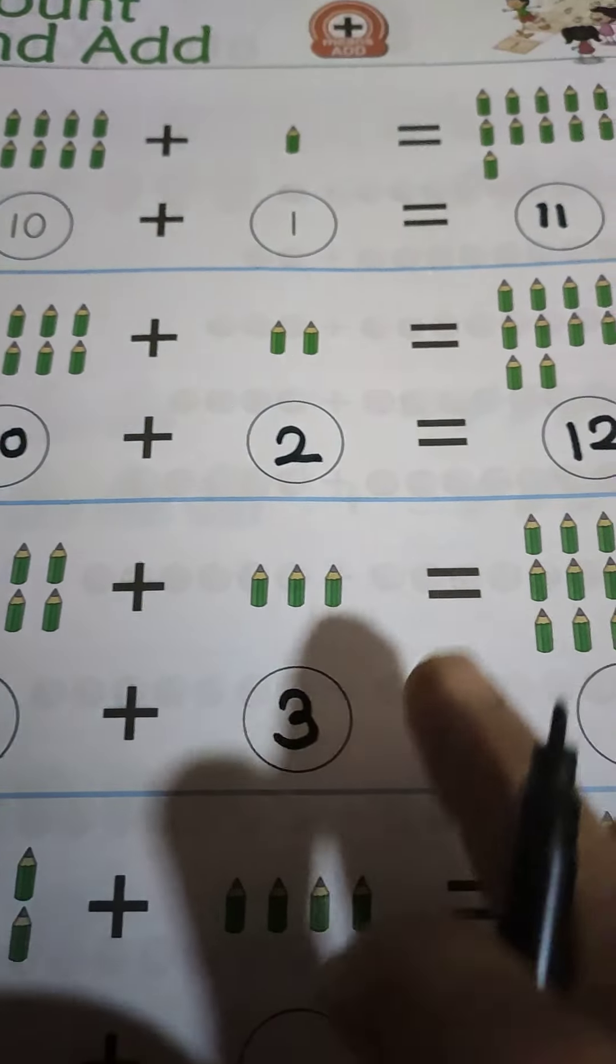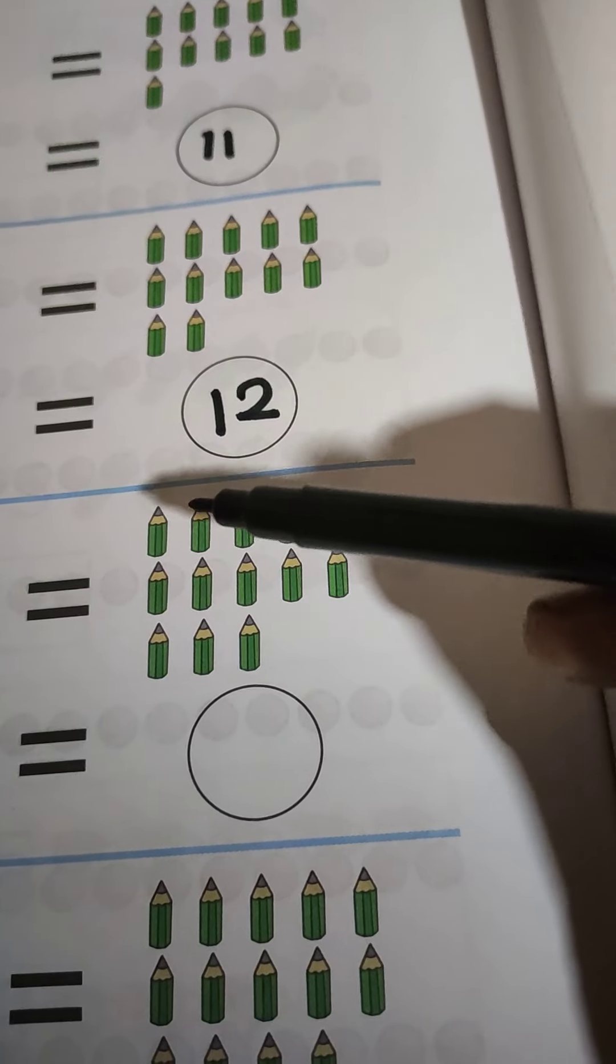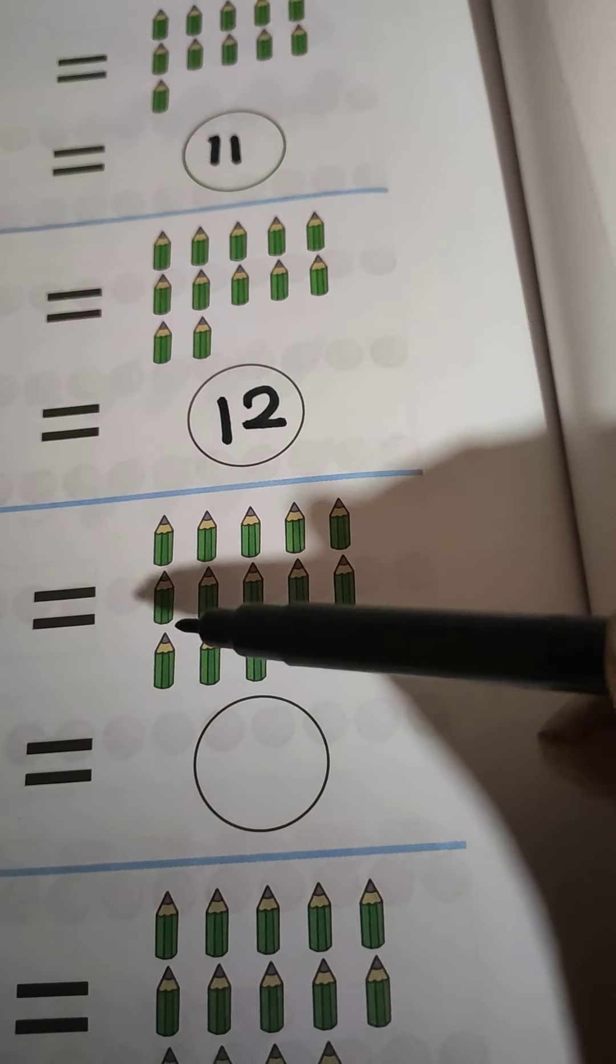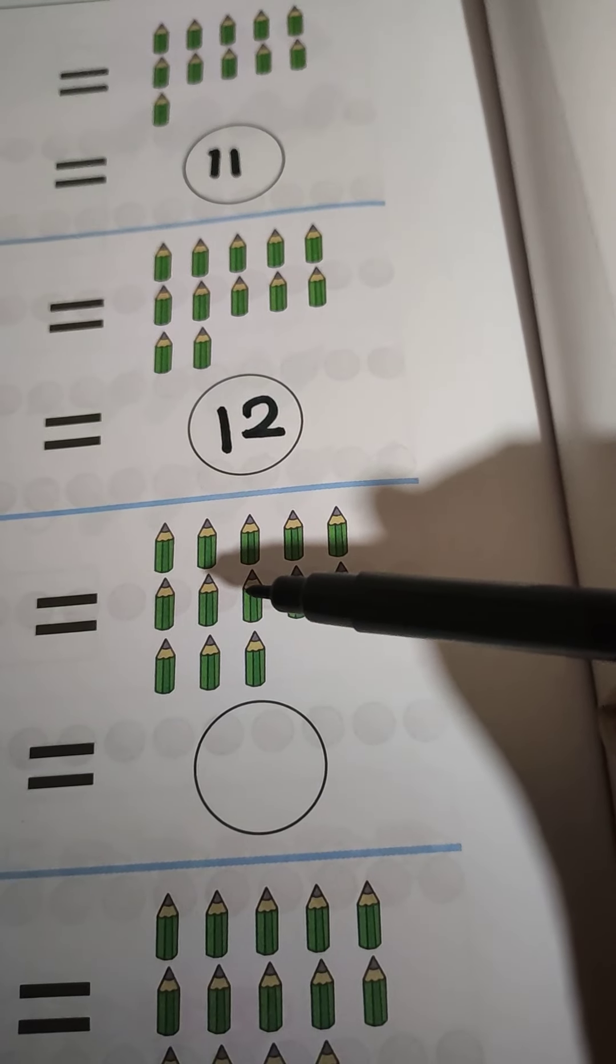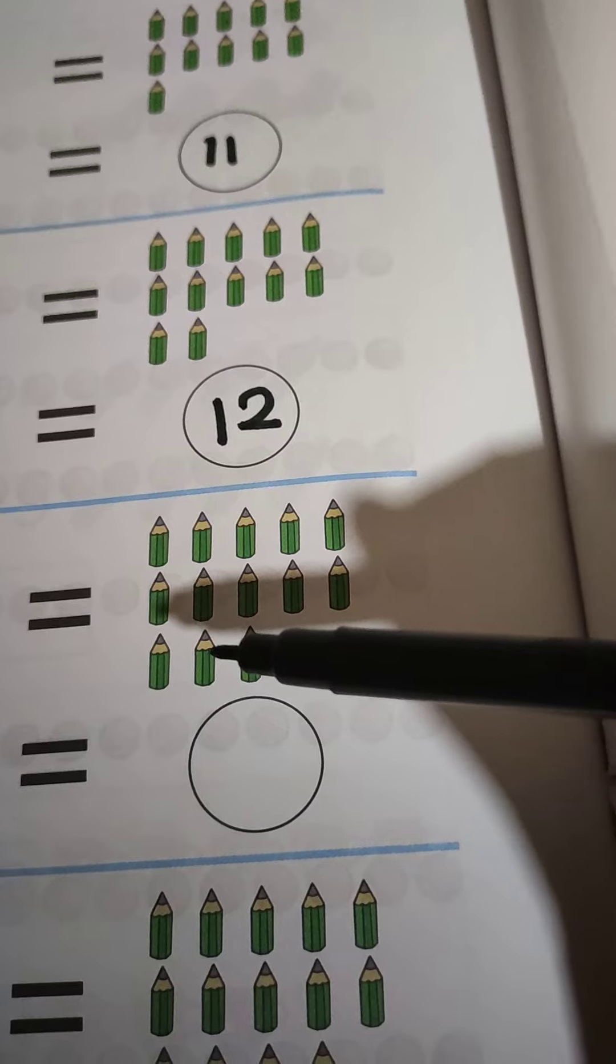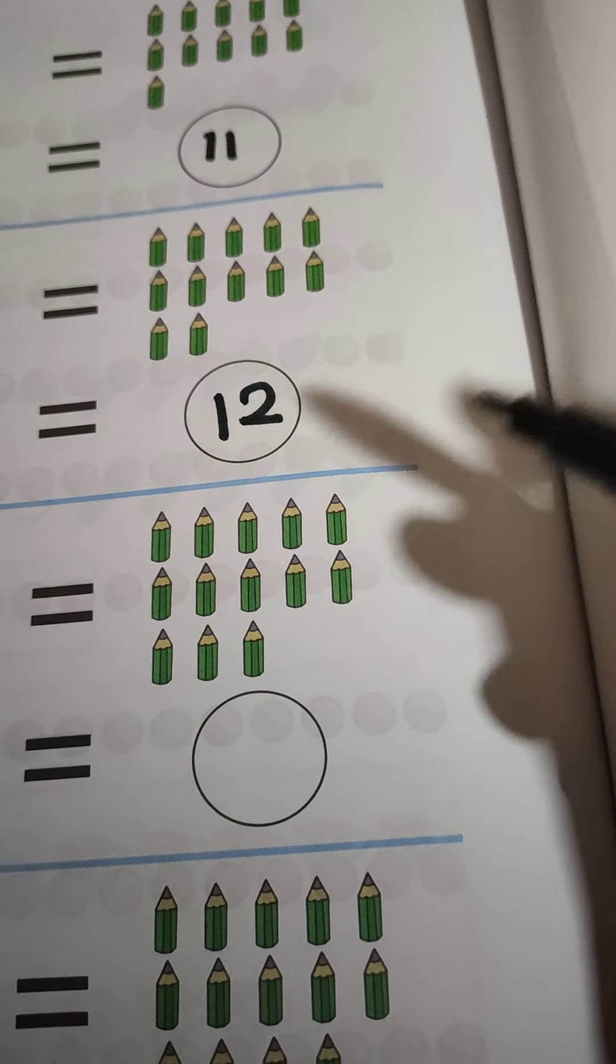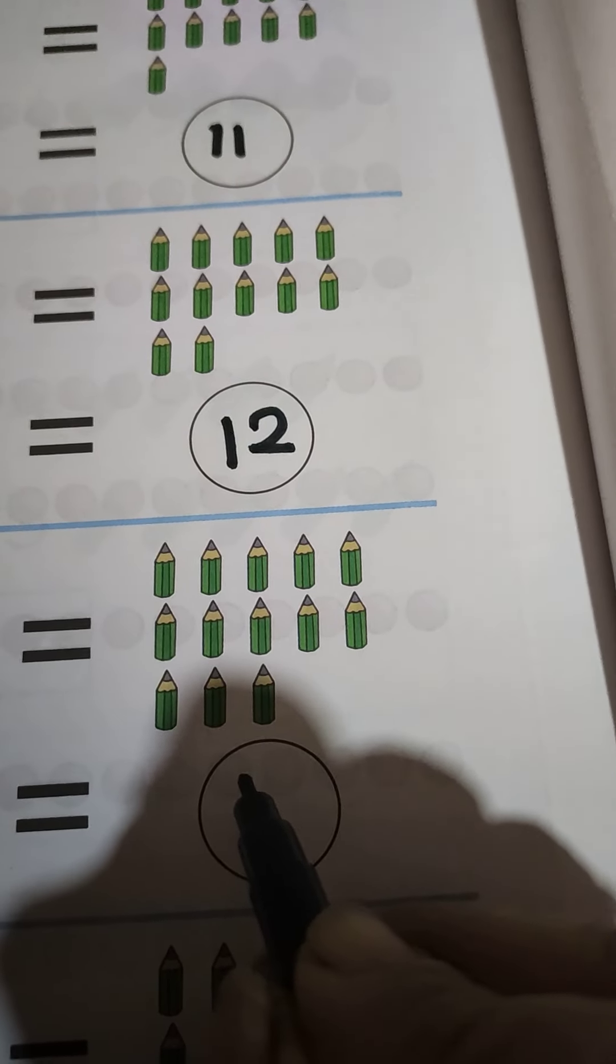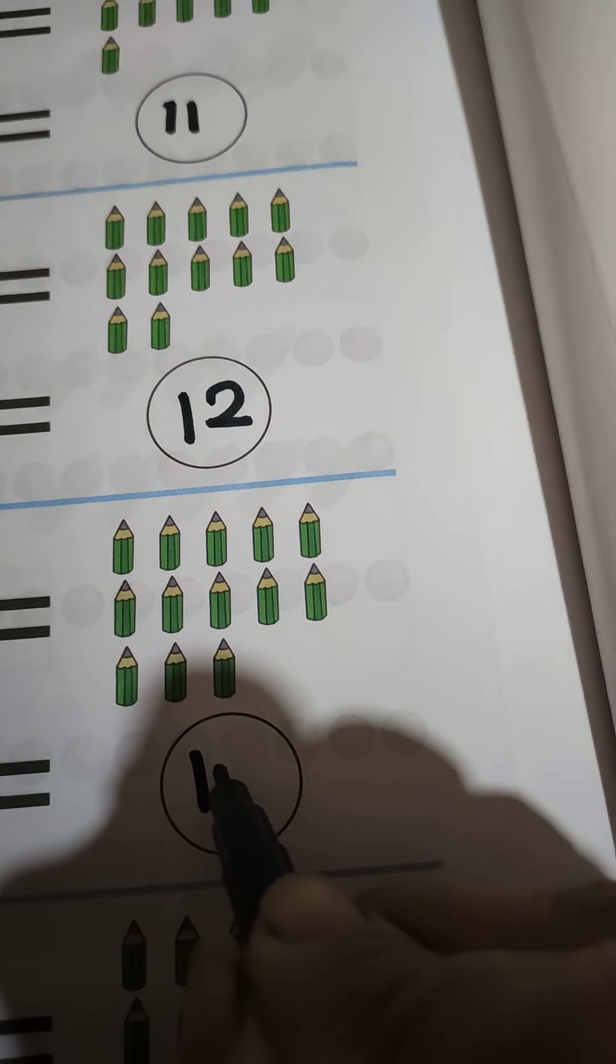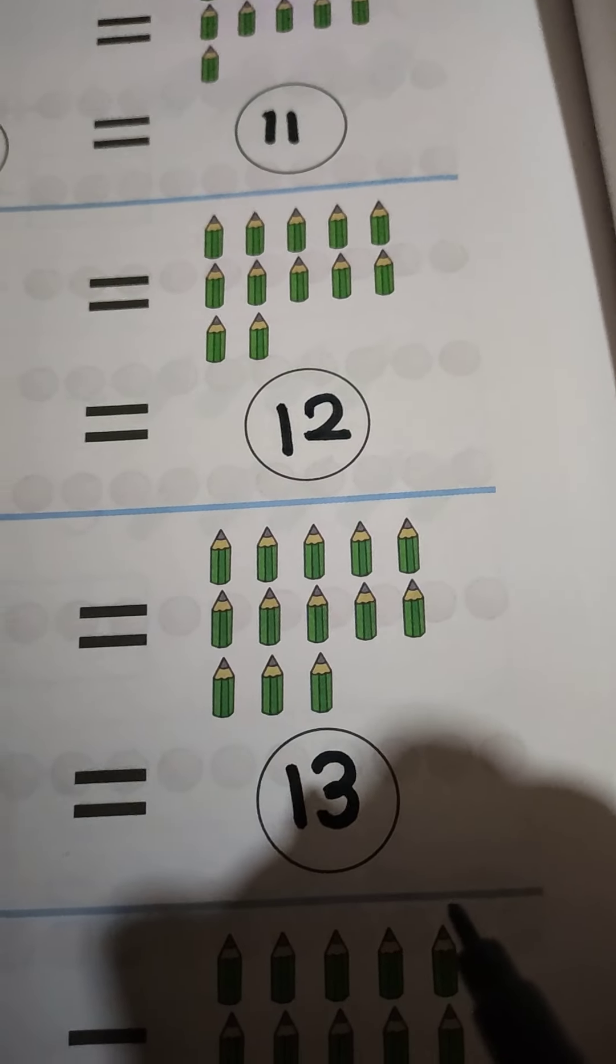All together makes, come on. Let us count. 1, 2, 3, 4, 5, 6, 7, 8, 9, 10, 11, 12, 13. How many pencils? 13. So write here 13.